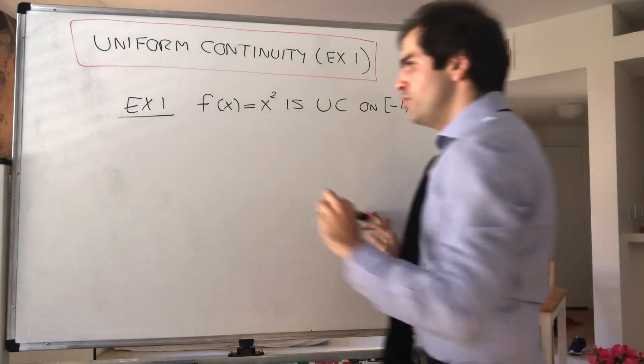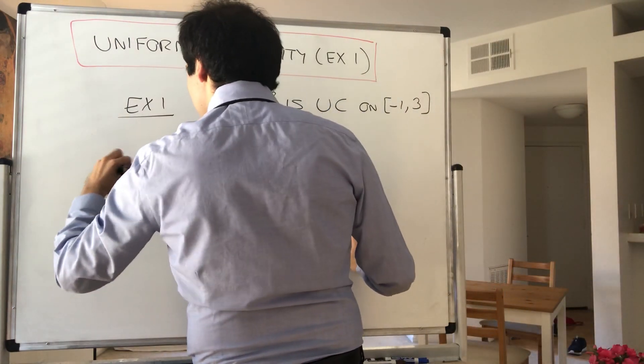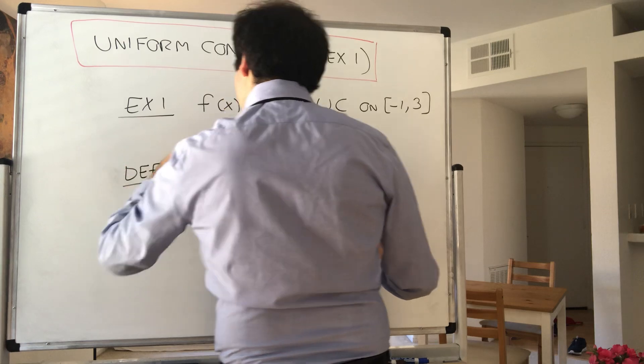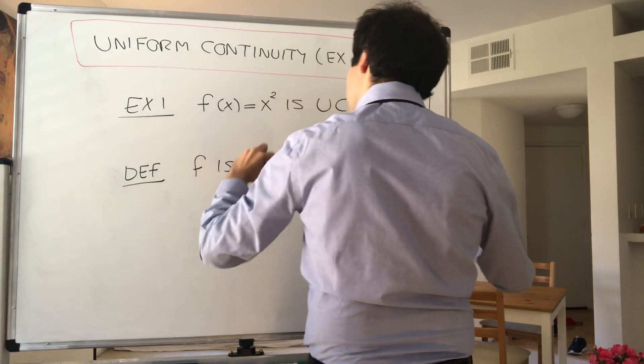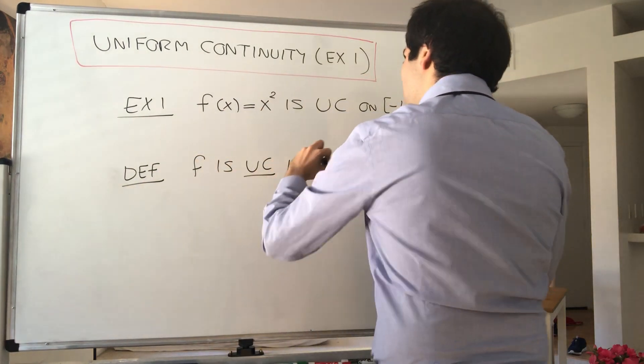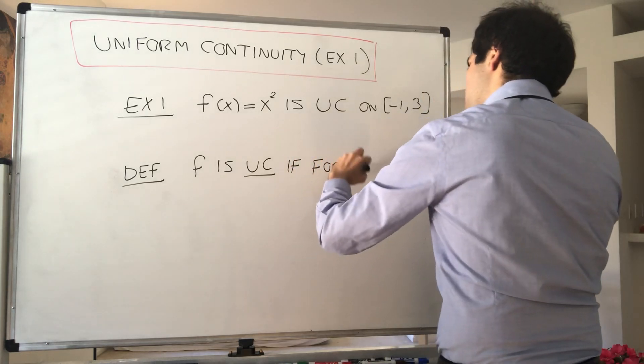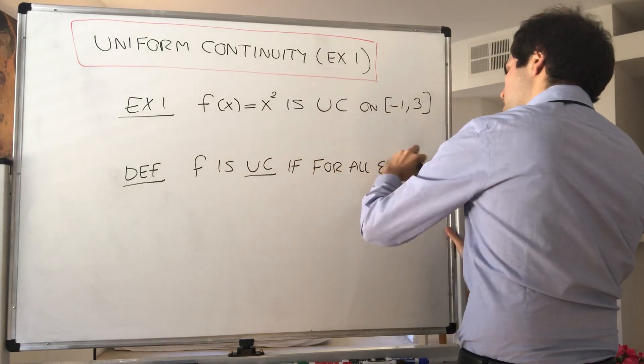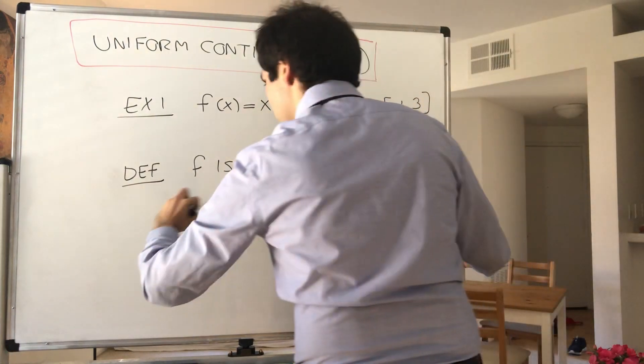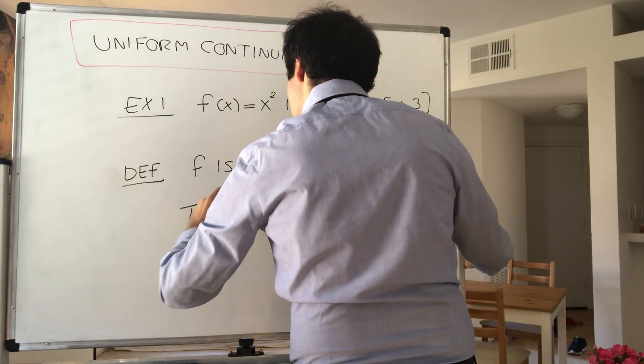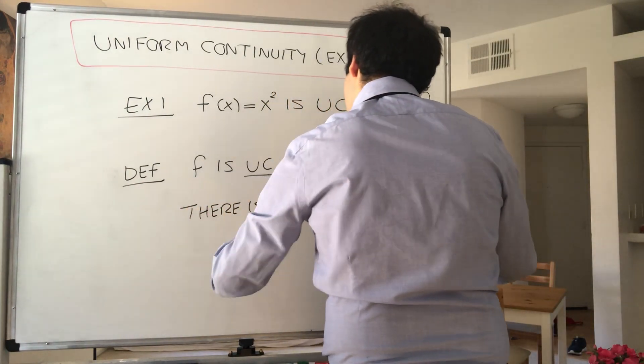So what's the definition of uniform continuity? So remember, f is uniformly continuous if, for all ε > 0, there is some δ > 0